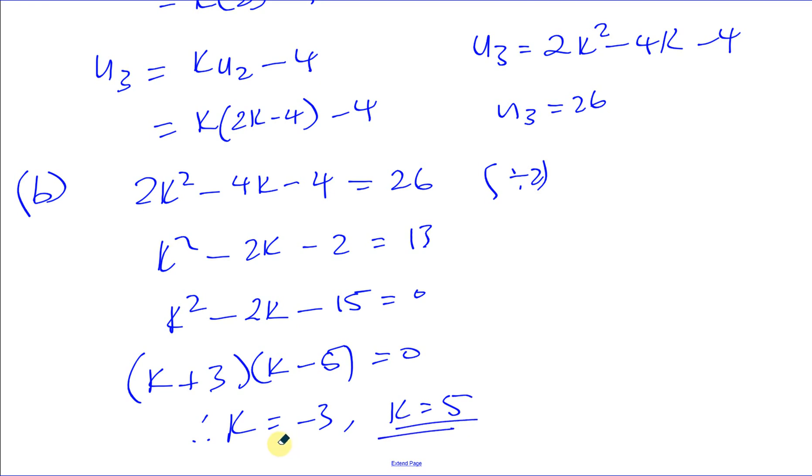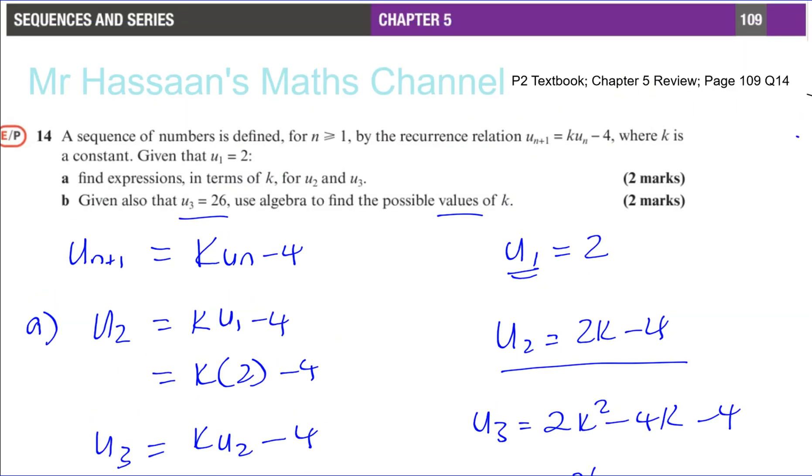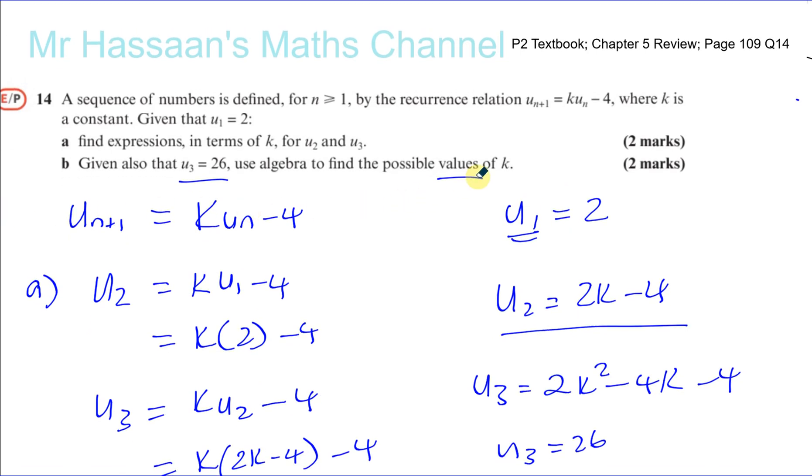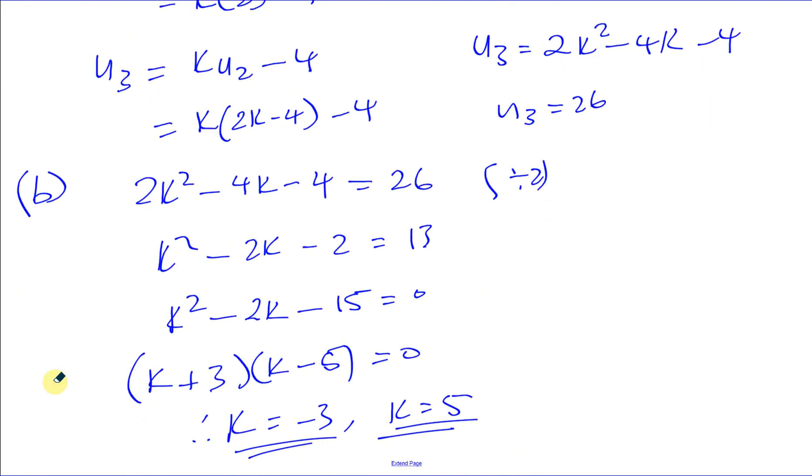There's no restriction for k, is there? Let's check. It doesn't say anything about k has to be greater than anything or whatever. And it also says find the possible values of k, so obviously it seems like there's more than one answer. So there we are. Simple as that.